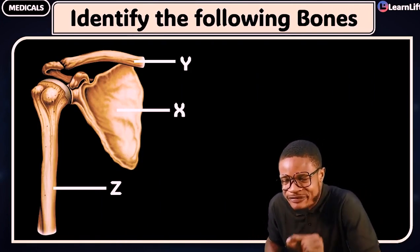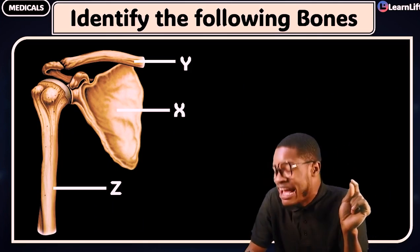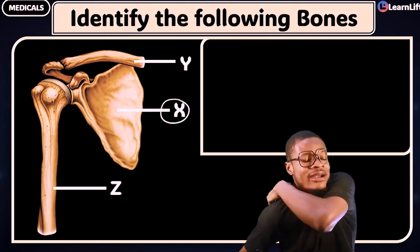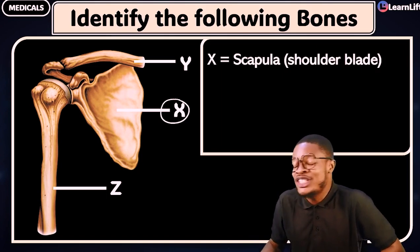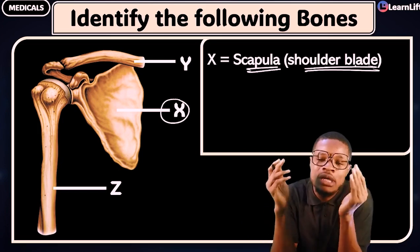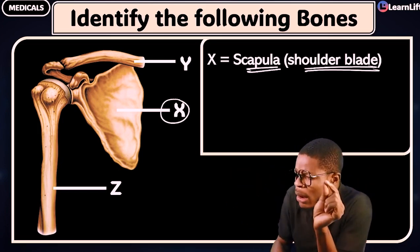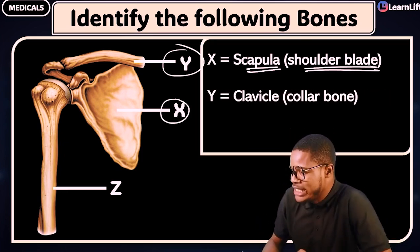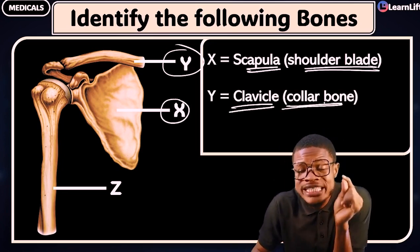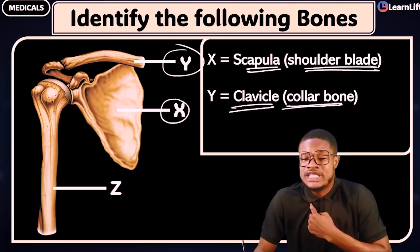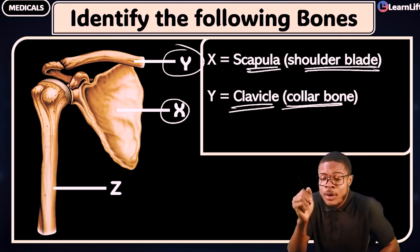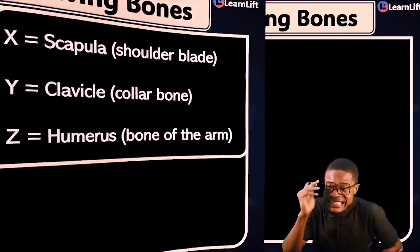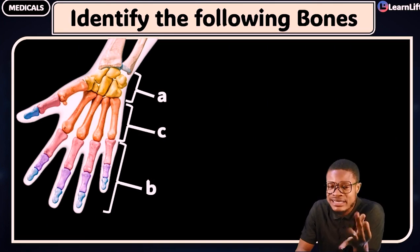Now, identify the following bones — X, Y, and Z. Let's start with X. X is at the back — it is called the scapula, or the shoulder blade. What about Y? Y is the clavicle, or the collarbone. You can also call it the beauty bone. What about Z? Z is the bone of the arm — the humerus. Either you call it humerus or bone of the arm, it's the same thing.